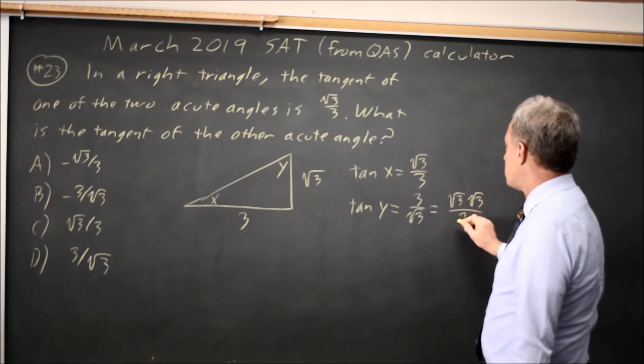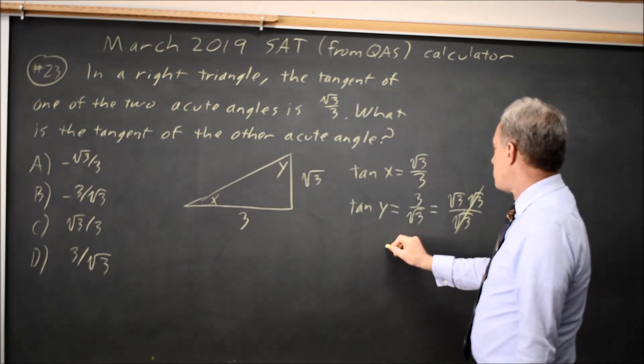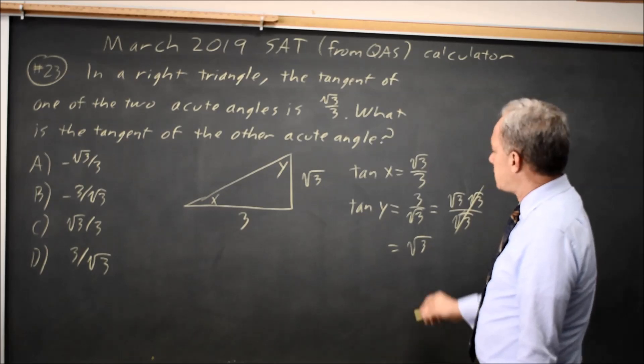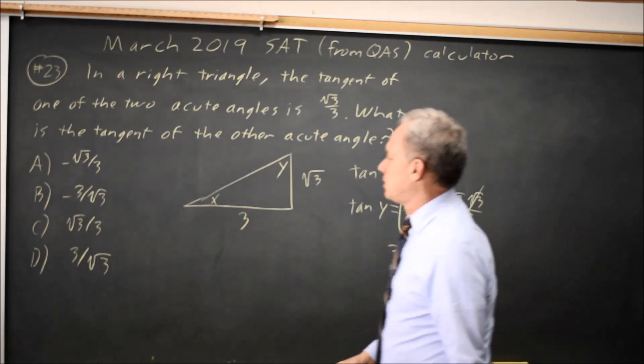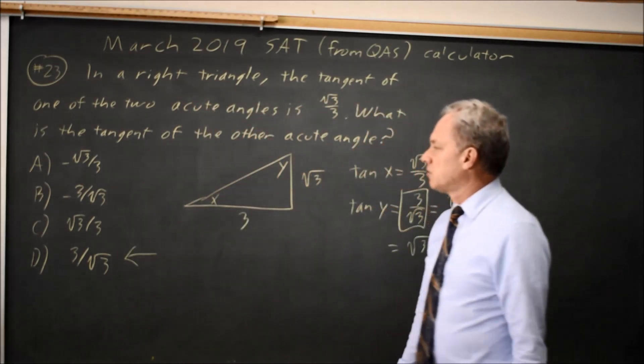Or I can write 3 as root 3 times root 3, and that's over root 3. Root 3 over root 3 cancels. That's 1, so the tangent is root 3. But actually, I didn't need to simplify that. They gave it to us in the form 3 over root 3 for choice D.